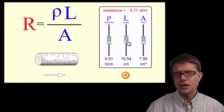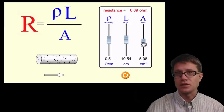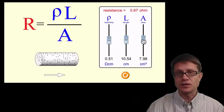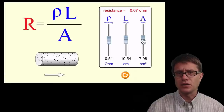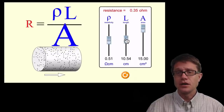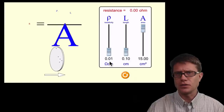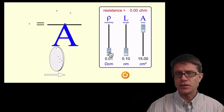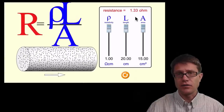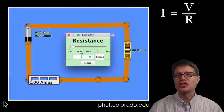Now let's look at area. As I decrease the area, resistance is greater; as I increase the area, there is less resistance. So to make the least resistant resistor you want a really large cross-sectional area, small length, and small resistivity — resistance goes to zero ohms. To have the most resistance, do the opposite: high resistivity, really long length, and a really small cross-sectional area — giving a really large resistance.